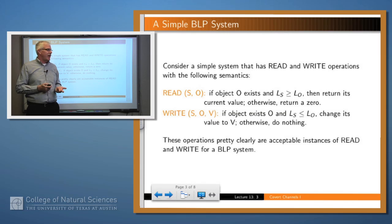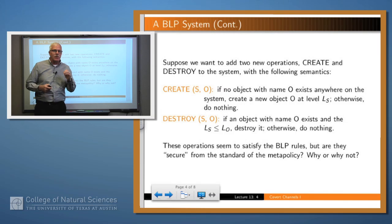And then WRITE, the semantics of that is we have three parameters: the subject, the object, and a value. If the object exists and ℓS ≤ ℓO, which is what the star property requires, then we change the value of the object to V, otherwise we don't do anything. These operations are perfectly reasonable from the perspective of Bell and LaPadula.